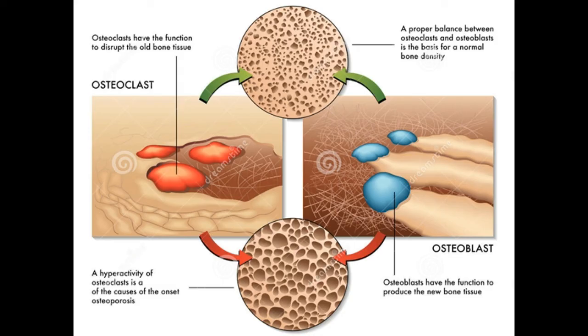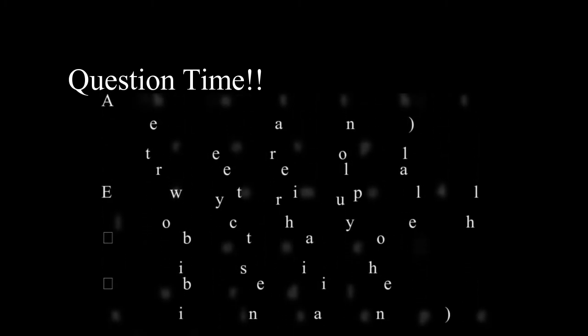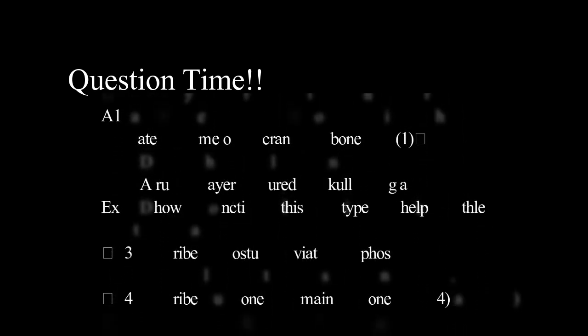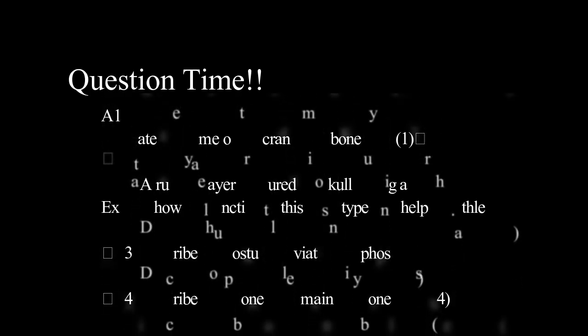Let's look at some examination-style questions. Question one: can you state the name of the cranium's bone type? Question two: a rugby player fractured his skull in a scrum — explain how the function of this bone will help the athlete. Question three: can you describe the postural deviation of kyphosis? Question four: can you describe how bone cells maintain bone mass?